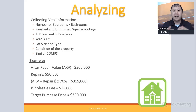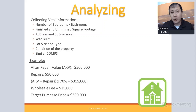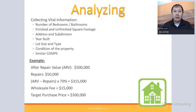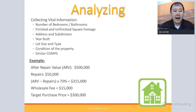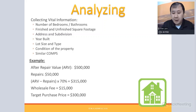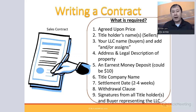As a wholesaler, you get the property under contract below what the flipper will pay. If the fix-and-flipper is willing to pay $315,000, you need to negotiate below that. The spread is your wholesale fee. For example, if your target fee is $15,000, you convince the seller to accept $300,000, then assign the contract to the fix-and-flip investor at $315,000.